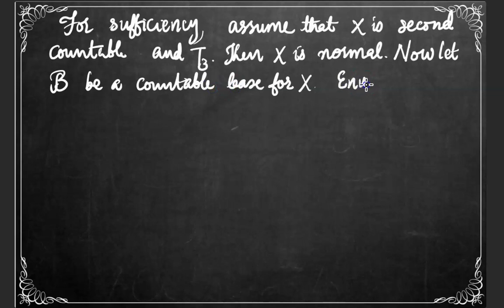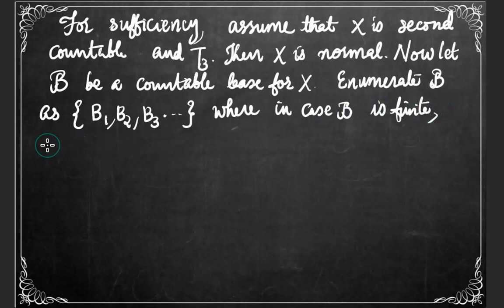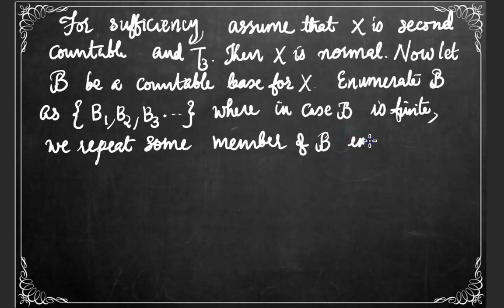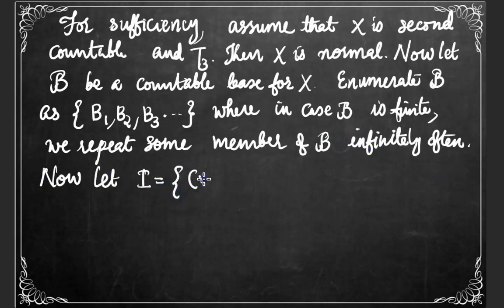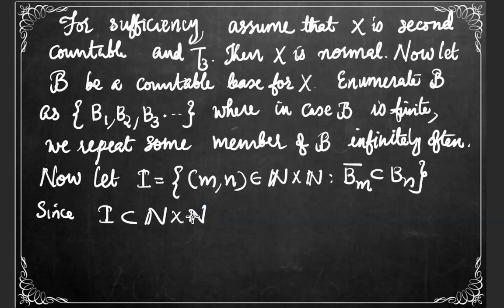Since B is countable, we can enumerate B as the set {B1, B2, B3, ...}, where in case B is finite, we repeat some member of base B. Now, let capital I be defined as the collection of all ordered pairs (m, n) in N cross N such that the closure of Bm is contained in Bn. Then I will be a subset of N cross N, which is the Cartesian product of two countable sets. So N cross N will be countable, and I, being a subset of a countable set, will be countable.